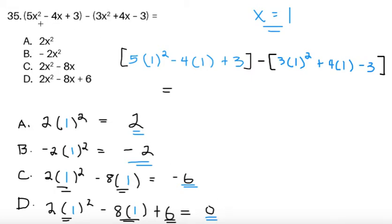So all you have to do is check what this value evaluates to. So 5 times 1 squared, that's 5, minus 4 times 1, that's 4. So 5 minus 4, that's 1. We add 3.